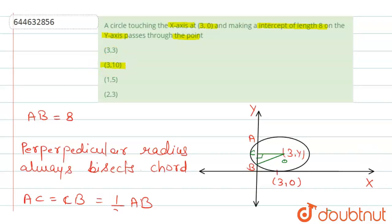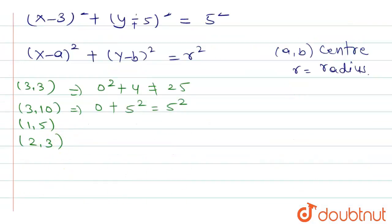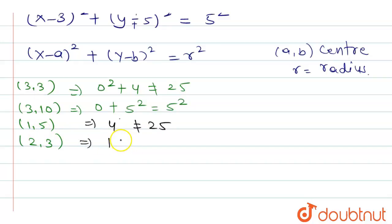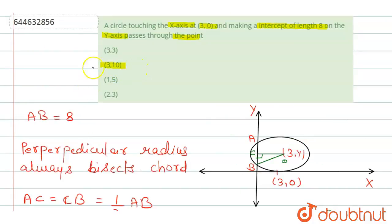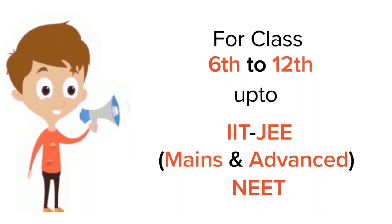Checking the remaining options: for (1, 5): (1−3)² = 4 and (5−5)² = 0, so 4 ≠ 25. For (2, 3): (2−3)² = 1 and (3−5)² = 4, so 5 ≠ 25. In the minus case, (3+5)² = 64 ≠ 25. So option D is also discarded. The only correct option is option B. I hope you understand the explanation, thanks for watching.